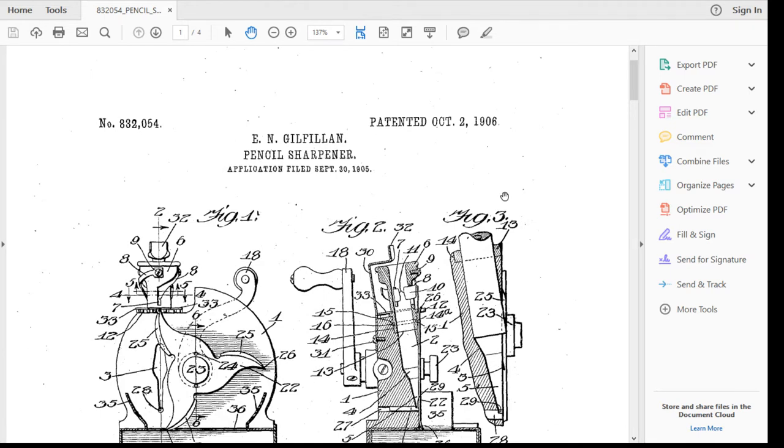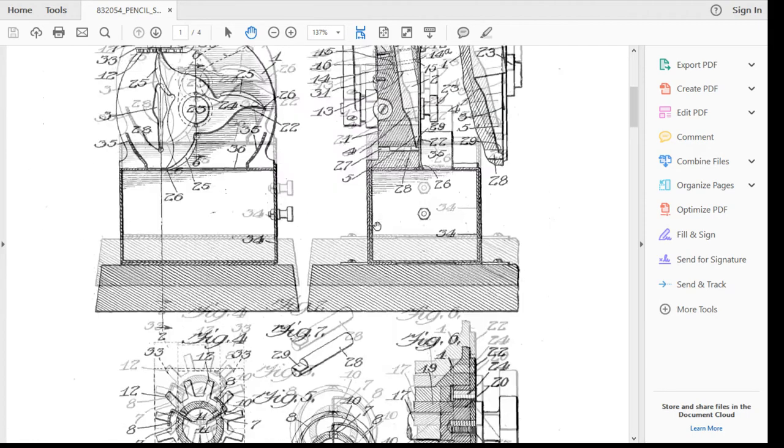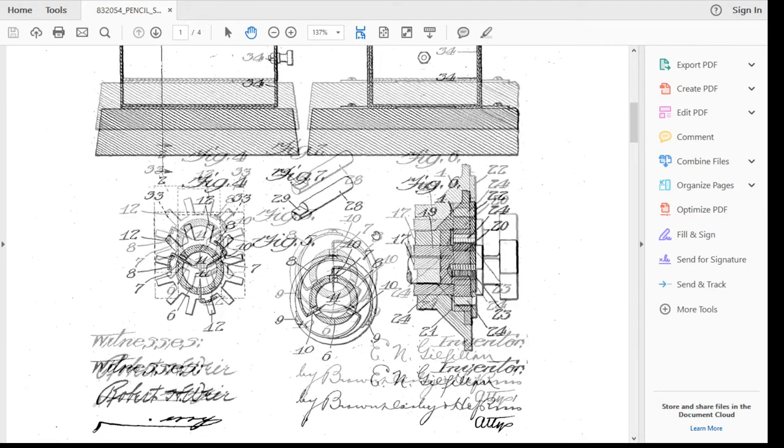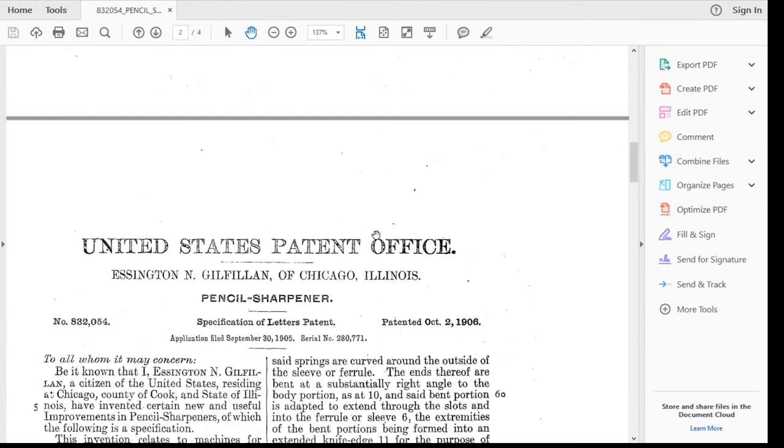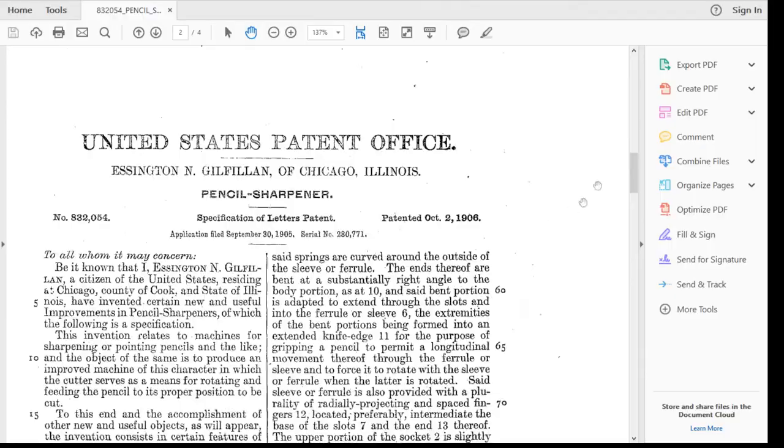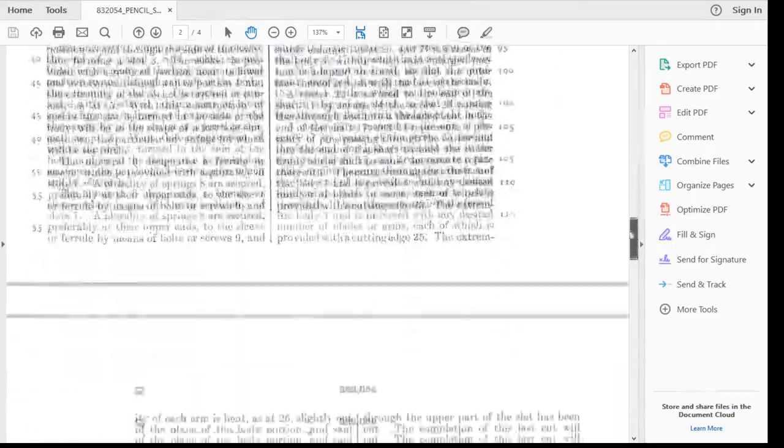So I got my calculator here. What is this? This is 2018, 1906 and 1906 makes it 112 years old. So a 112 year old pencil sharpener, very cool thing.